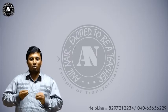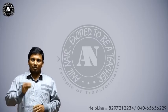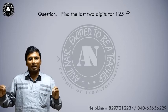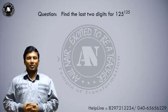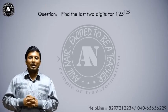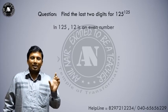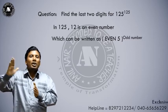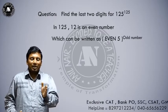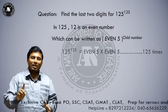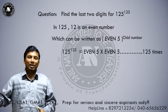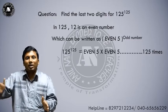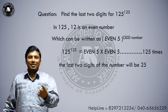To make you understand effectively, let us take more questions and try to answer orally. First question: find the last two digits for 125 power 125. Here 12 is an even number, so the question is an even number ending with 5 raised to an odd power. Even 5 into even 5 gives 25, into even 5 again gives 25, and so on — even if it is written 125 times, the answer will still be 25.